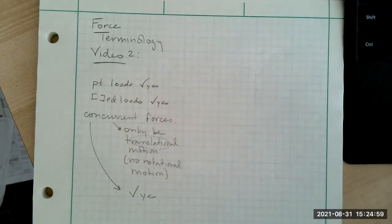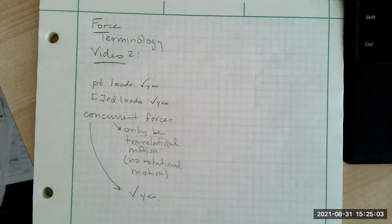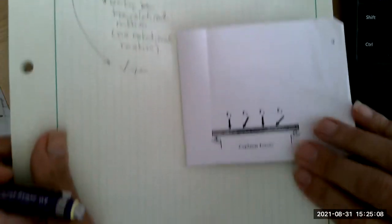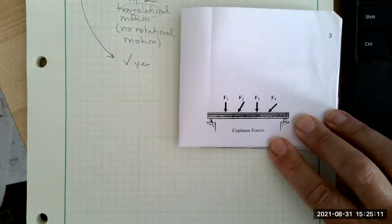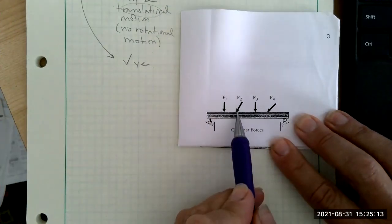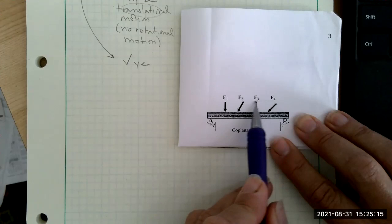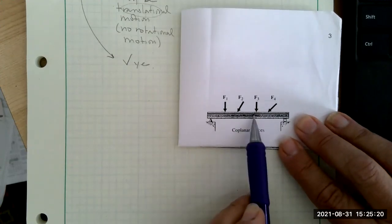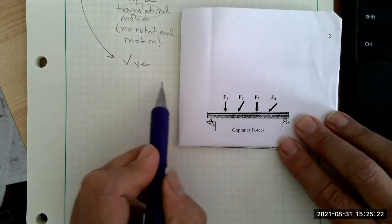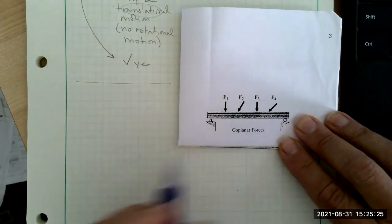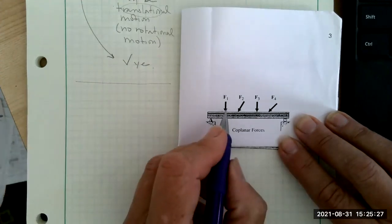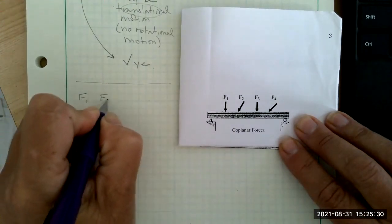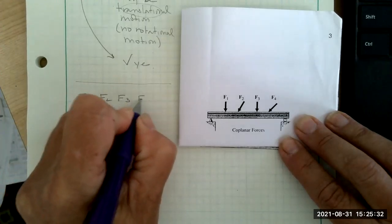So now I'm going to introduce another. Let's take a look at this. In this situation, I have F1, F2, F3, and F4, which means they all have different magnitudes. And they're all being applied at a point along a beam. Are they all point loads? Yes, they're all point loads.